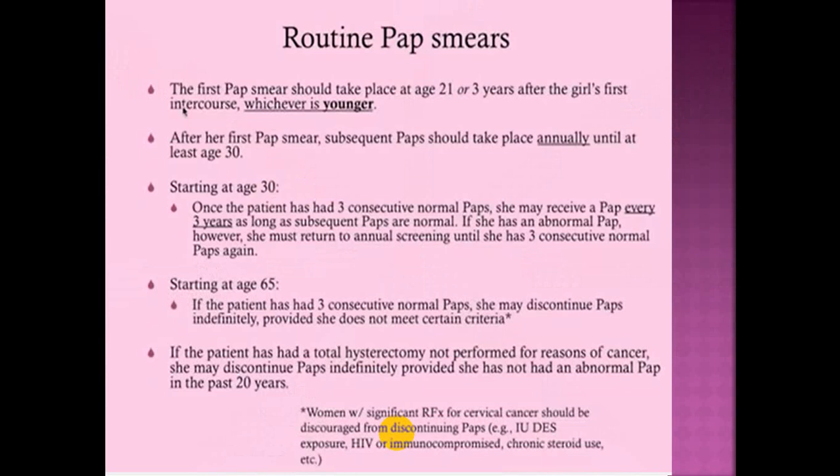Pap smear screening guidelines: the first Pap smear should take place at age 21 or three years after the girl's first intercourse, whichever is younger. After the first Pap smear, subsequent smears should take place annually until age 30. Starting at age 30, once the patient has had three consecutive normal Paps, she may receive a Pap every three years as long as subsequent Paps are normal. Starting at age 65, if the patient has had three consecutive normal Paps, she may discontinue Paps indefinitely, provided she does not meet certain criteria.